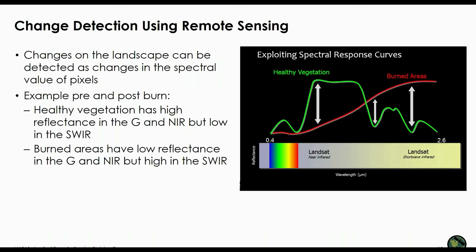We detect change using satellite imagery by detecting changes in the spectral values of pixels — pixels will have different values before and after changes have occurred. For example, healthy vegetation has high reflectance in the near-infrared but low in the shortwave infrared, while burned areas are the opposite: low in the near-infrared and higher in the shortwave infrared. You can use that information to not only detect burned areas but also detect the severity of the burn.